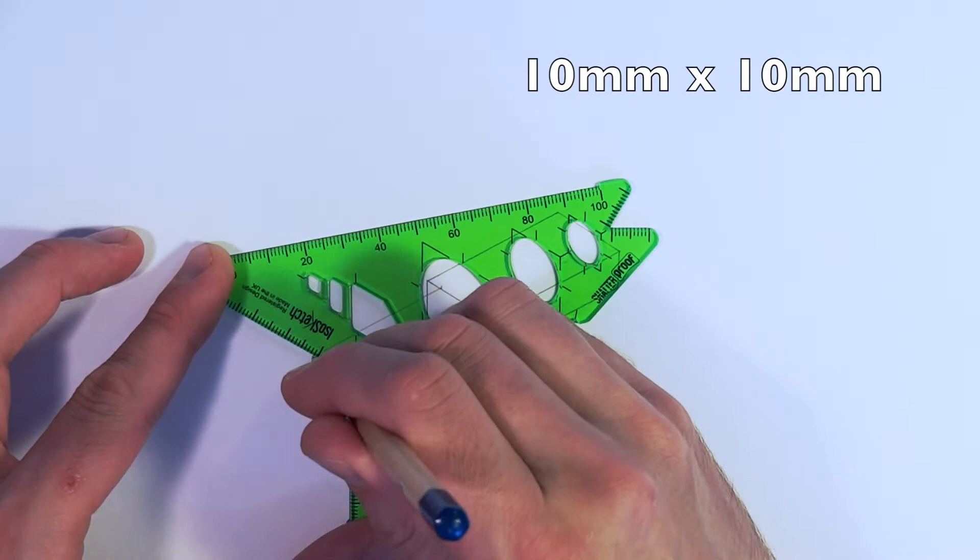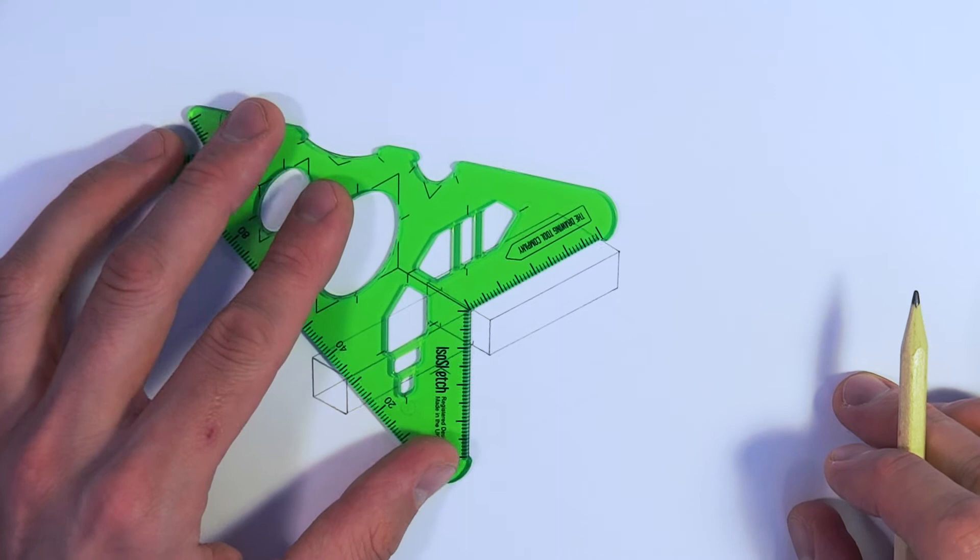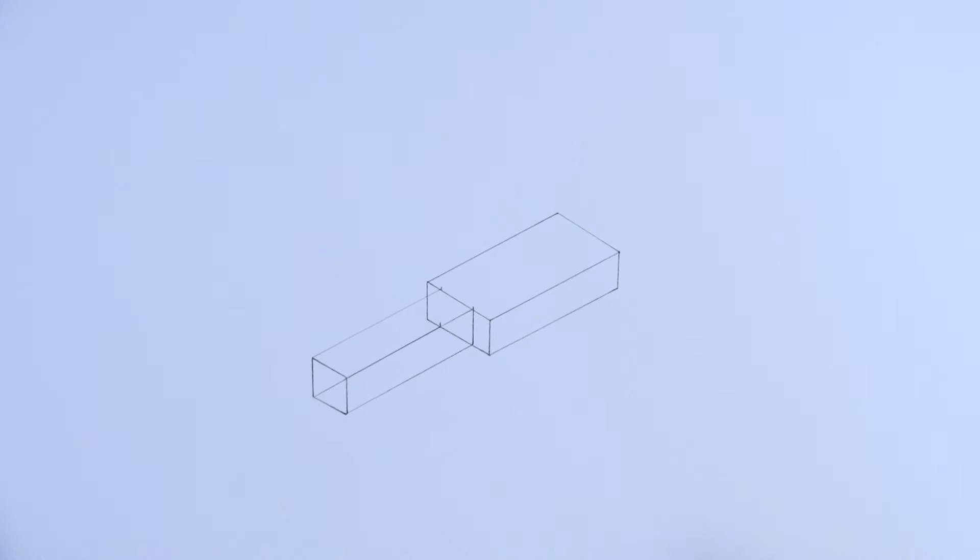So all we're doing now is just finishing this end off. It's 10 millimeters by 10 millimeters just to finish off the nose cone of our car. How easy was that? Right, we're just going to finish off this little line here so that we've got all the lines that we need in place for the chassis.